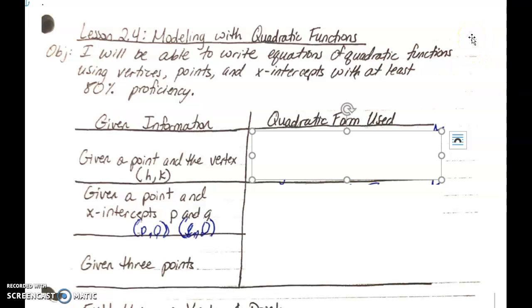Okay, so let's begin talking about 2.4. So lesson 2.4 is about modeling with quadratics. And the main thing you want to take away from the objective here is that I will be able to write equations of quadratic functions using vertices, points, and x-intercepts. So we are going to be writing the equations of quadratic functions. Now, in 2.3, you learned how to do that using the focus and the directrix. In 2.4, you're going to be learning how to do that if you're given certain information.